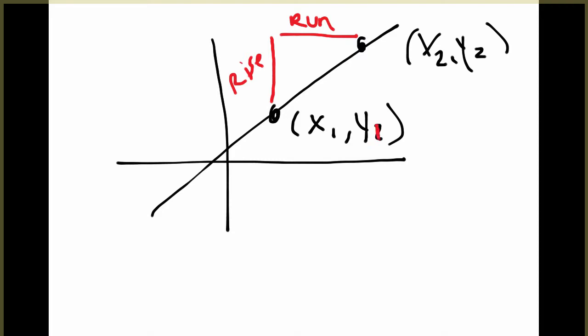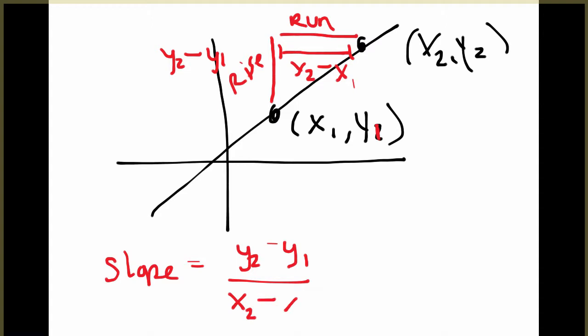Well, the rise can be found by finding the change in the y values. Oh sorry, that's supposed to be a one there. So we can do y2 minus y1 to find the rise. And the run is just our change in our x values, and so we can find that by doing x2 minus x1. And our slope formula is simply the rise, y2 minus y1, over the run, x2 minus x1.